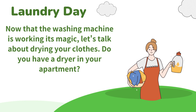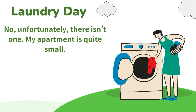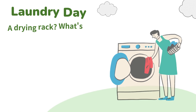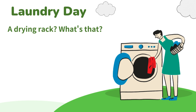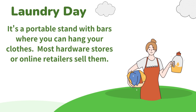Now that the washing machine is working its magic, let's talk about drying your clothes. Do you have a dryer in your apartment? No, unfortunately there isn't one. My apartment is quite small. No problem. You can still dry your clothes without a dryer. You can hang them on a drying rack or clothesline. A drying rack? What's that? It's a portable stand with bars where you can hang your clothes. Most hardware stores or online retailers sell them.